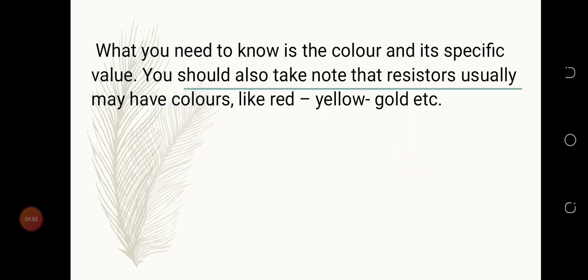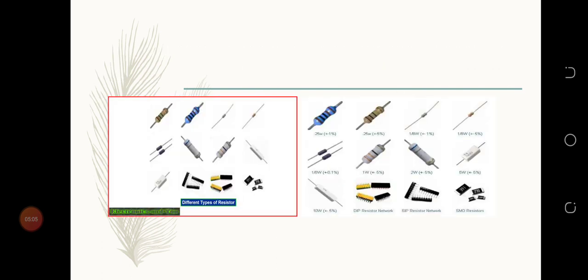What you need to know is the color and its specific value. You should also take note that resistors usually may have colors like red, yellow, gold, etc. Looking at different types of resistors as we discussed the colors, you can see the blue, the brown, the white with lines in it, the yellow, and the black.